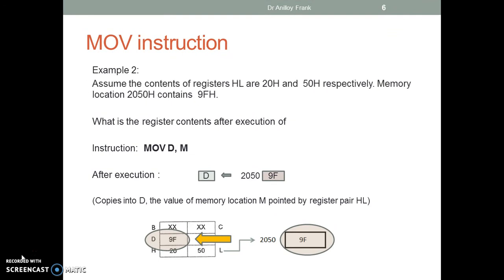Second example: assume the content of register pair HL are 20 and 50 respectively, and memory location 2050 contains 9F. What is the register content after the execution of instruction MOV D,M? After execution, the value of memory location 2050 is copied to register D. This location is pointed to by register pair HL.